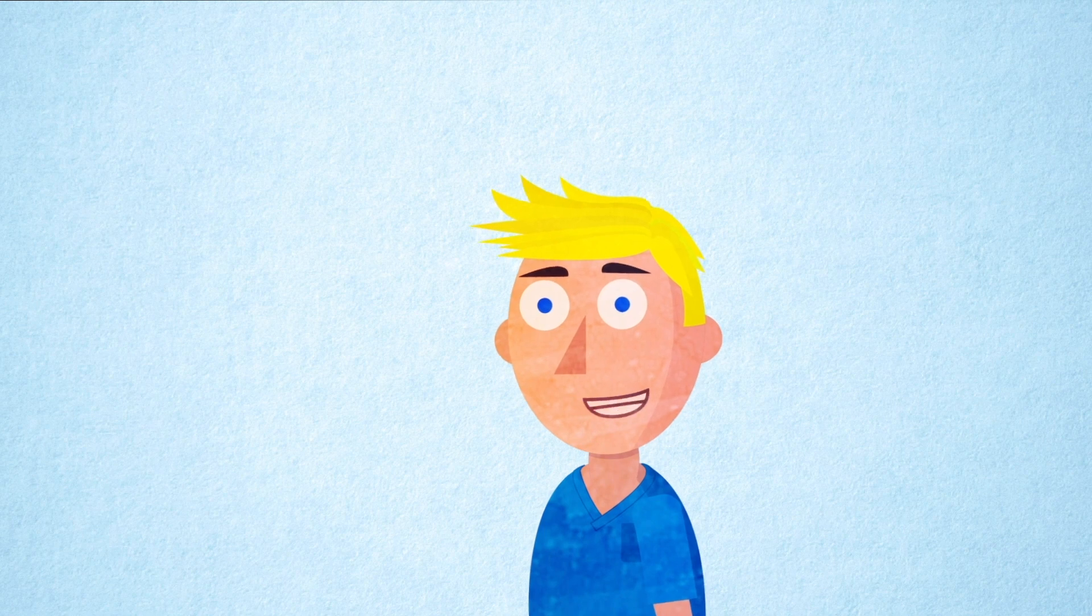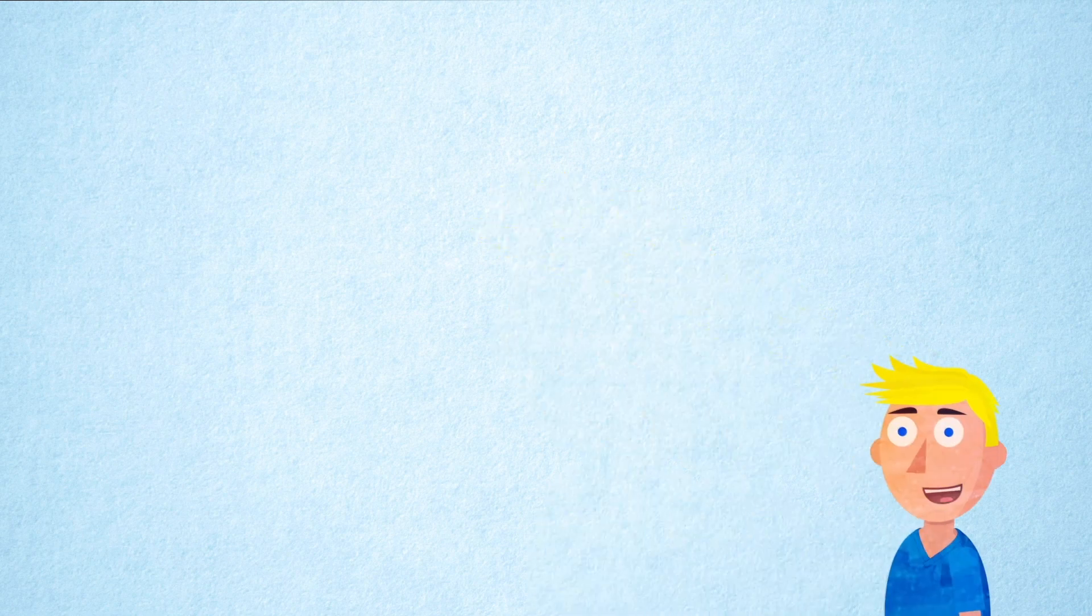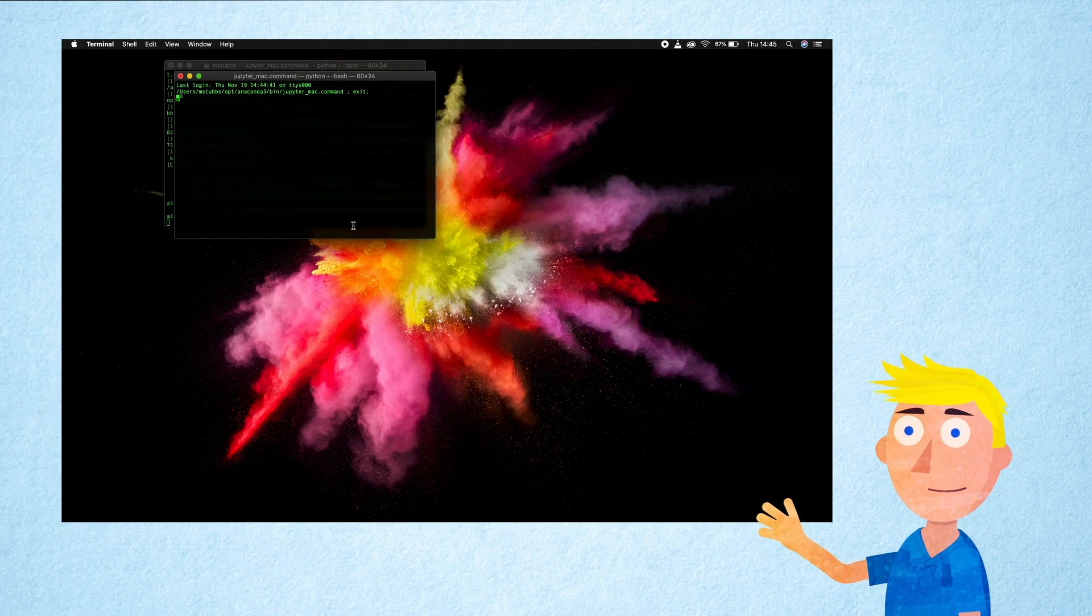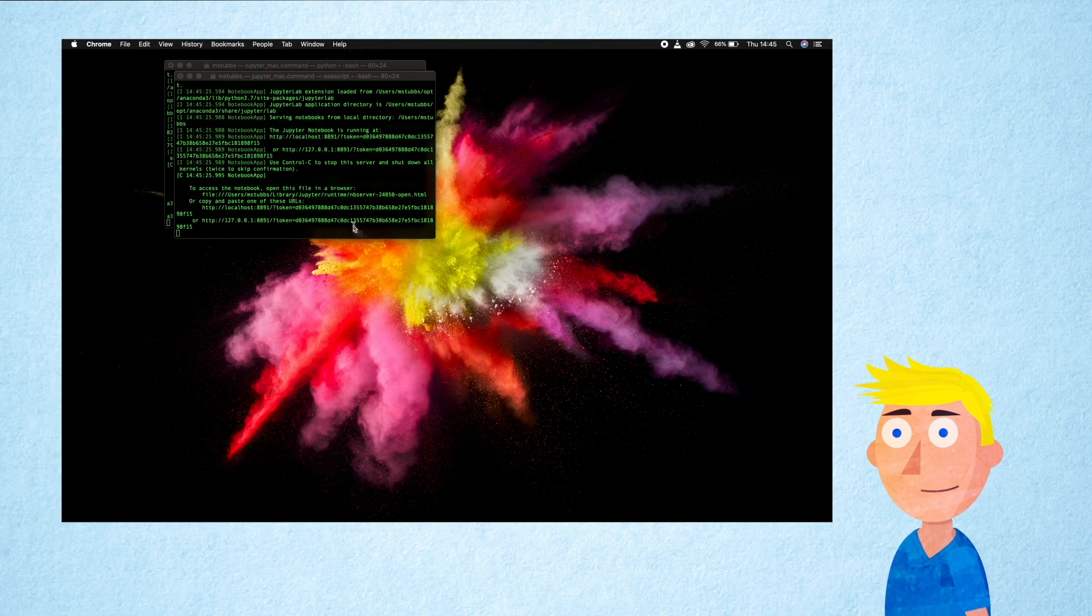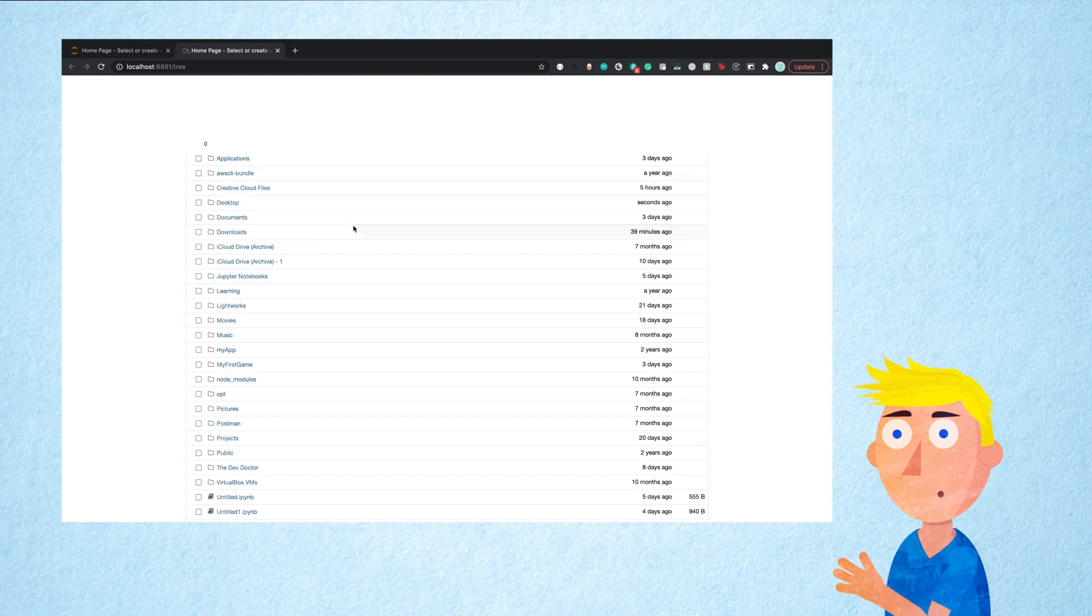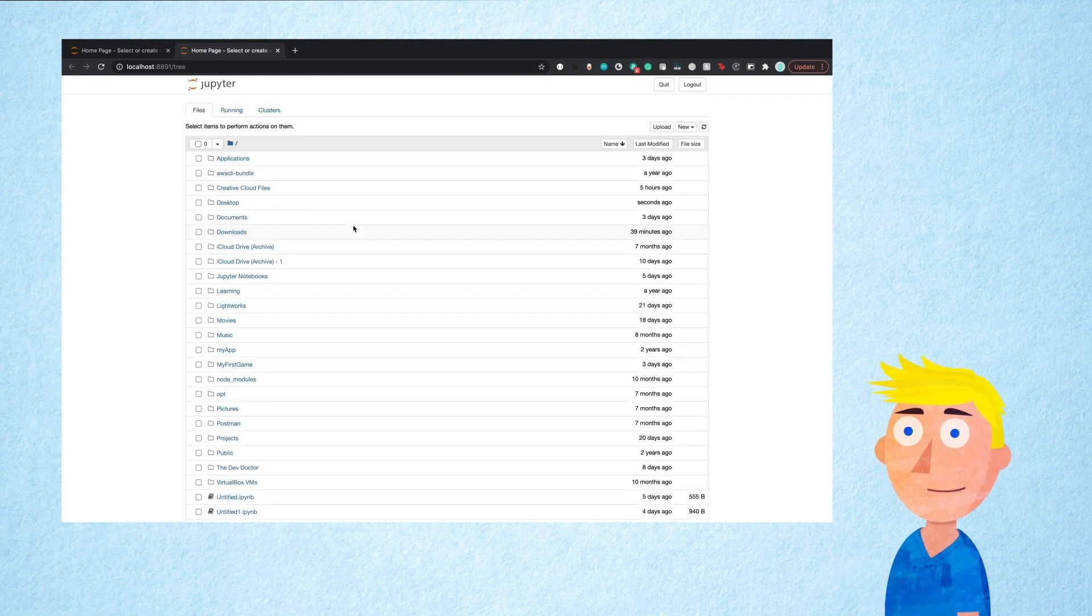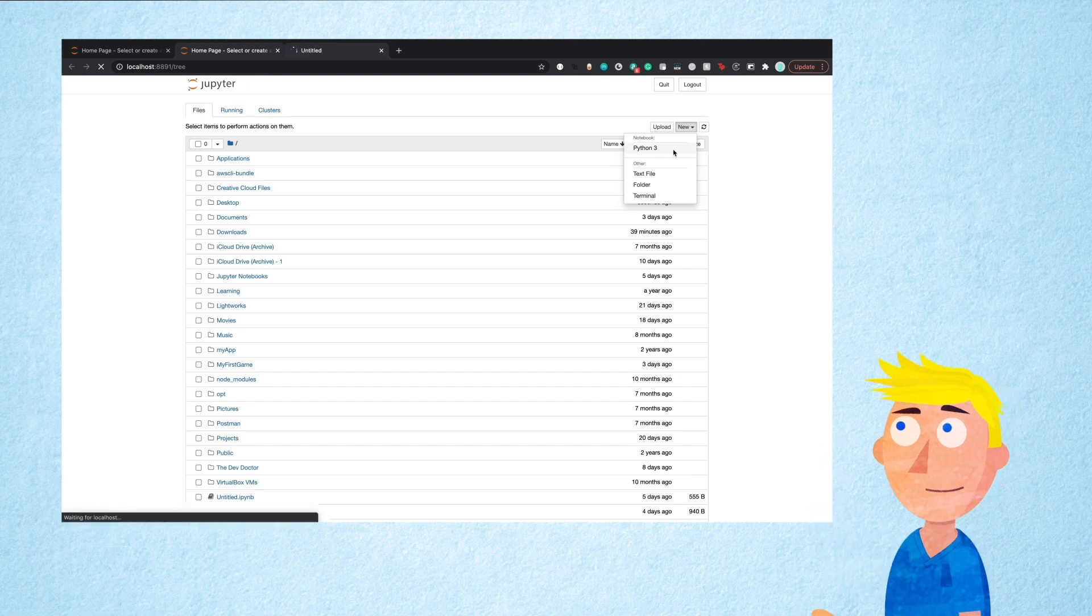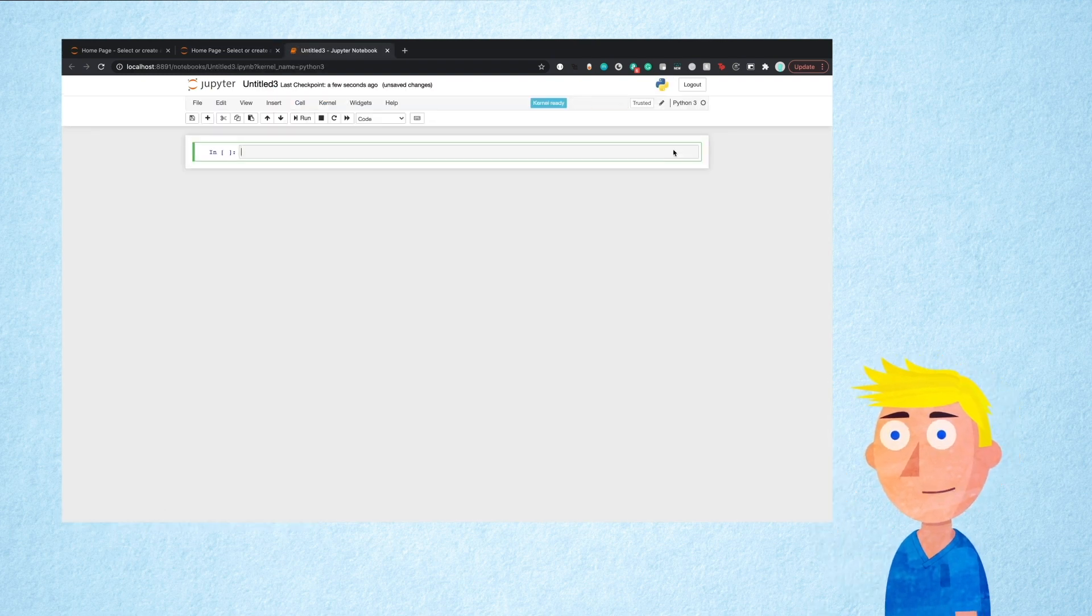Once that's downloaded start up the Anaconda navigator. This will give you a screen that looks like this. Press the launch button under where it says Jupyter Notebook. This will open up a new Jupyter Notebook in your web browser. So let's start a blank notebook by clicking on the new button in the top right of the screen and click on Python 3. This will open up a blank Python notebook.